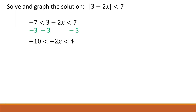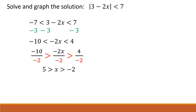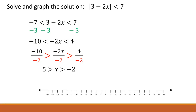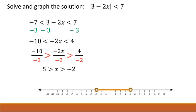Now we need to divide all three parts by negative 2. Because we're dividing by a negative number, we have to reverse the direction of our inequality signs to maintain a true inequality. So our solution is 5 is greater than x, which is greater than negative 2. In other words, all solutions for x have to be between negative 2 and positive 5.